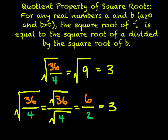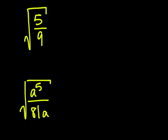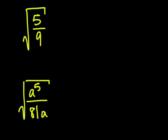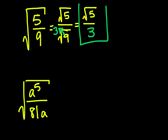Let's put this into action. We have the square root of 5 divided by 9. We can't take the square root of 5 divided by 9 directly. However, we can look at it as the square root of 5 over the square root of 9. While the square root of 5 stays because 5 is not a perfect square, the square root of 9 becomes 3. So we have the square root of 5 over 3.